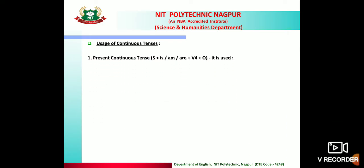Present continuous tense formula: Subject + is/am/are + V4 + Object. V4 means the verb's first form plus '-ing'. For example: reading, writing, speaking, listening.